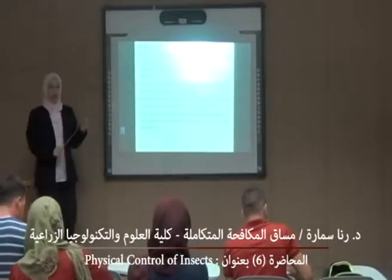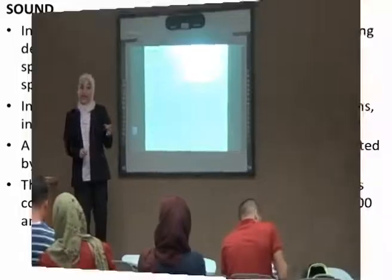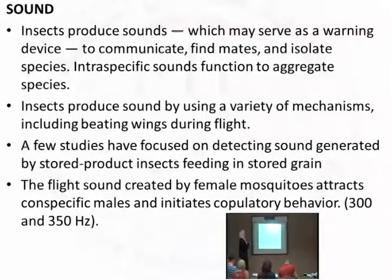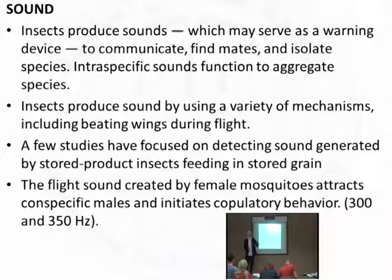Good morning. Today we will continue with our physical control methods — the physical methods of pest control. The last topic we covered was sound insects, where insects communicate with each other by producing sounds. These sounds serve purposes such as alarm signals, for example when you disturb a colony of ants, they scatter randomly — this is an alarm — or to find a mate.